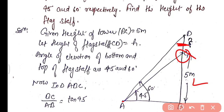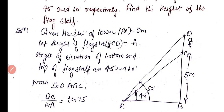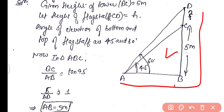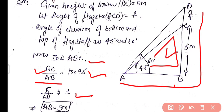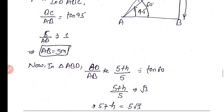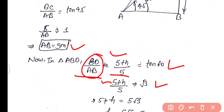The angle of elevation of the bottom of the flagstaff (point C) is 45° and of the top (point D) is 60°. Given height of tower BC = 5 meters; let height of flagstaff CD = h. In triangle ABC: BC/AB = tan45° = 1, so 5/AB = 1, giving AB = 5 meters.